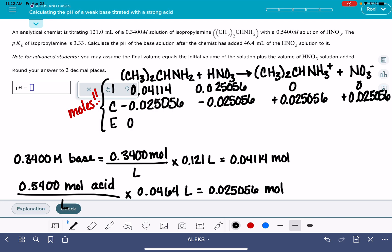That leaves me with 0.016084 moles of the base, 0 HNO₃, and 0.025056 of each one of the products.